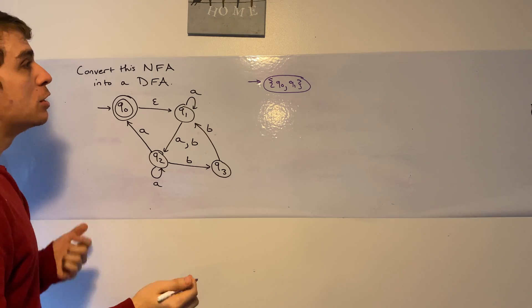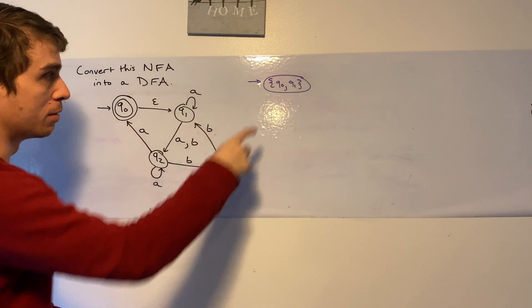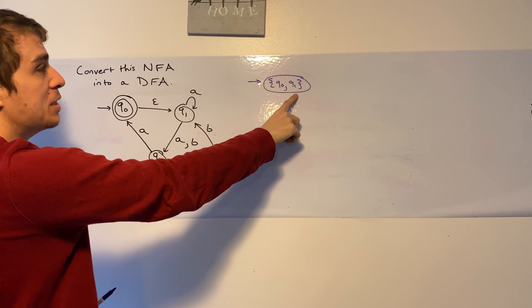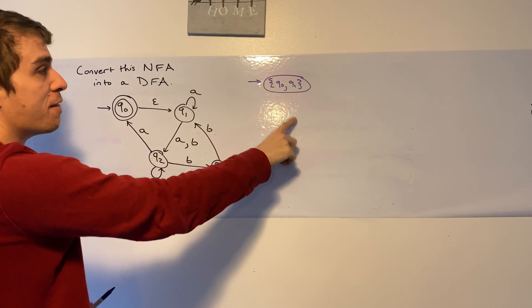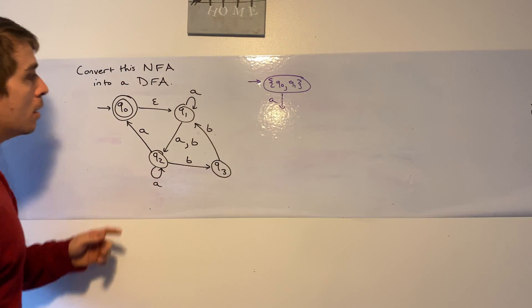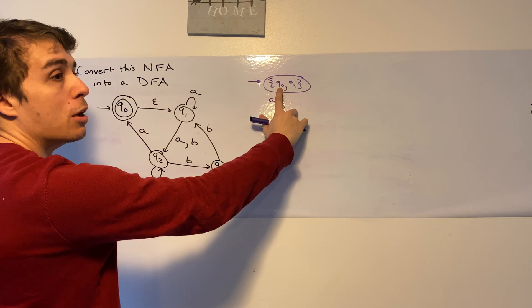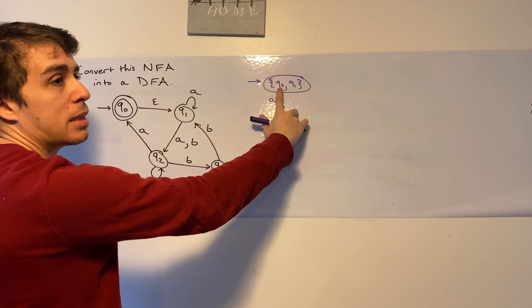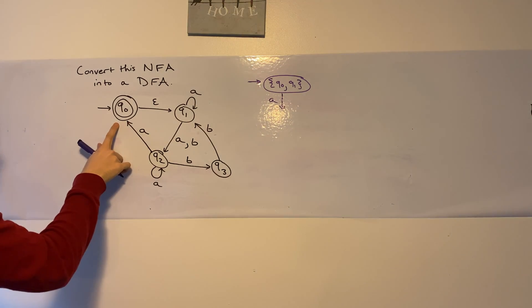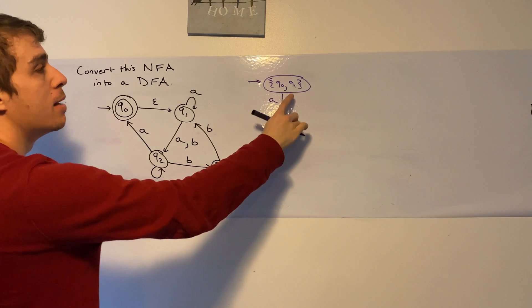When we make our DFA, the set of states we could be in is {Q0, Q1}. The DFA's states keep track of every single possible state we could be in at that point as we look at this NFA. So at the very beginning we could either be in Q0 or Q1. Now we just have to figure out what transitions on input A and input B this DFA will go to. Let's look at input A.